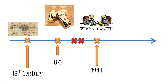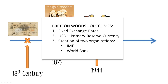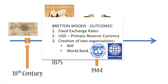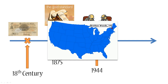Let's look at the outcomes of the Bretton Woods agreement in more detail. First, fixed exchange rates: all currencies were pegged to the US dollar. Second, the US dollar became the primary reserve currency, meaning it had to be backed by gold. Third, it led to the creation of two organizations: the International Monetary Fund — a pool of funds where all participating nations contribute regularly, and if they have problems they can take money out, fix their problems, and return it with interest — and also the World Bank, a financial institution of the United Nations whose main purpose is to reduce poverty and help developing countries. By the way, it's called the Bretton Woods agreement because it was signed in a town called Bretton Woods in New Hampshire, USA.